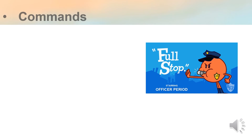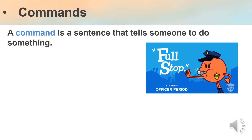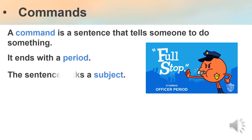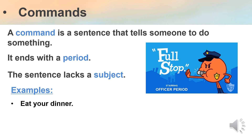The third type: commands. A command is a sentence that tells someone to do something — it gives you an order. It ends with a period and it lacks a subject; you will not find a subject in a command sentence. "Eat your dinner." This is a command because it tells someone to do something, it is an order, it ends with a full stop, it doesn't have a subject, and the first word is a verb.